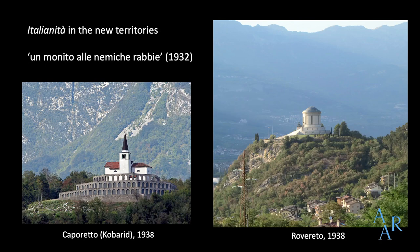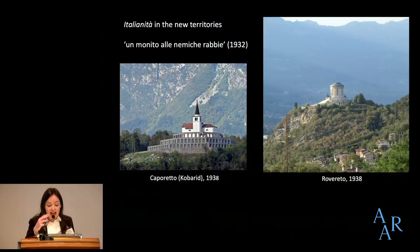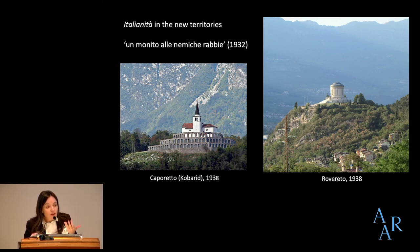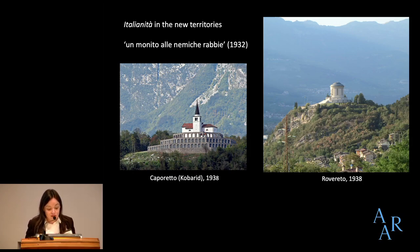At the ossuaries of Rovereto and Caporetto — Caporetto being the site of Italy's catastrophic defeat in the First World War — the ossuaries were located high up on hills so they would dominate the towns below. These locations were chosen explicitly as a warning to Italy's enemies, as a monitor alle nemiche rabbie. In 1919, the inhabitants of these new territories had gained Italian citizenship, the first time citizenship was granted on this scale based on being born on Italian territory — ius soli — rather than Italian parentage — ius sanguinis.